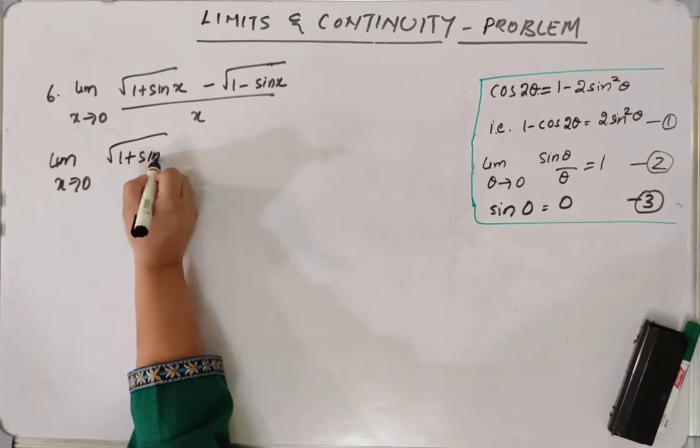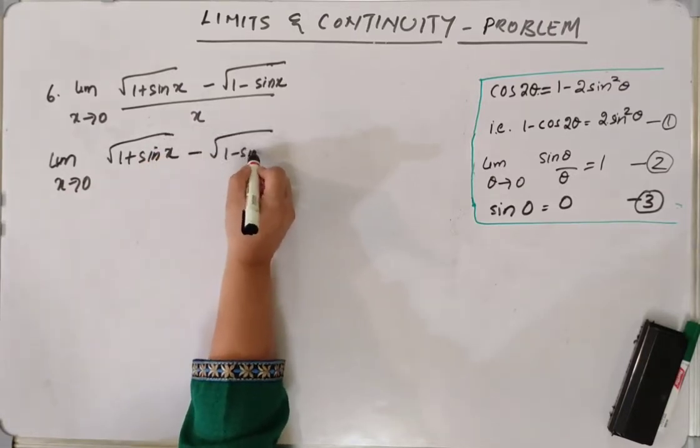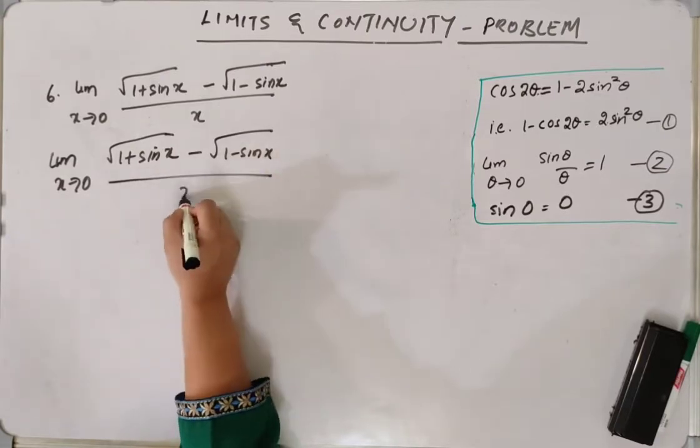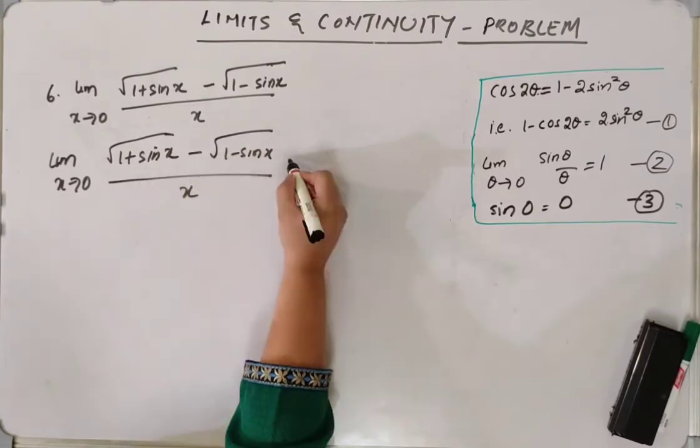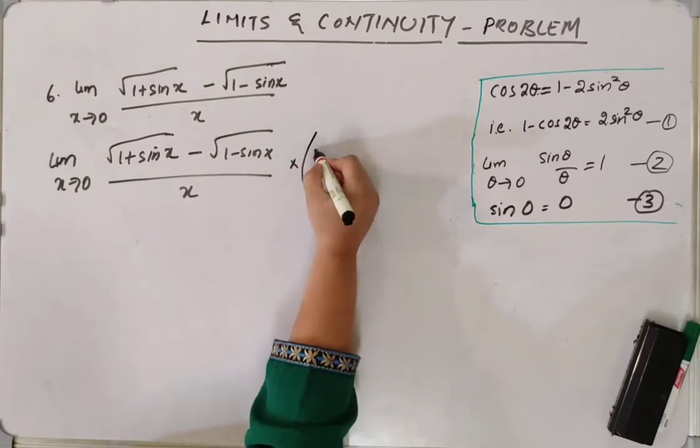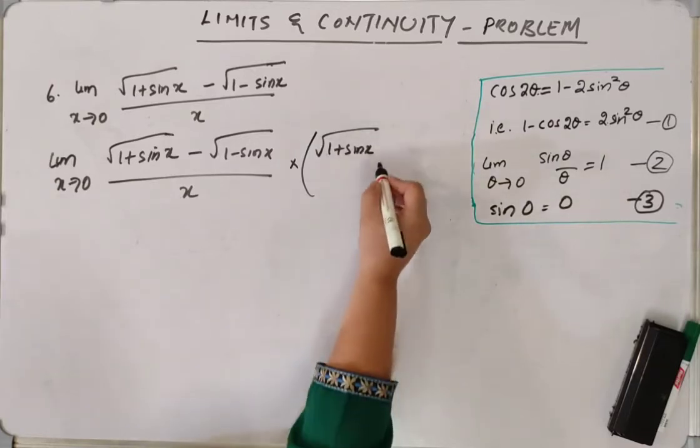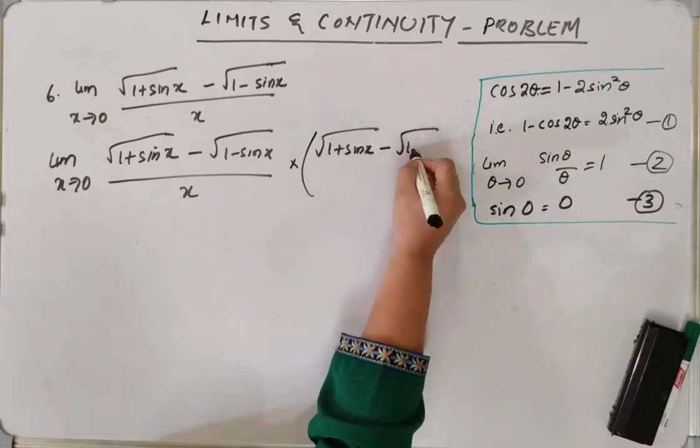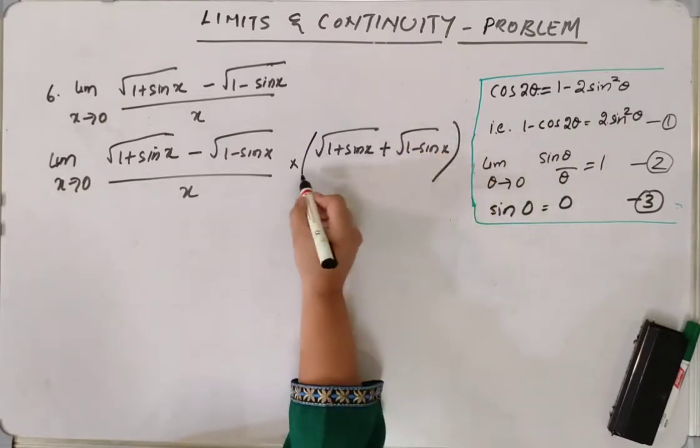1 plus sin x minus 1 minus sin x per x. We can multiply and divide by this numerator: 1 plus sin x minus 1 minus sin x. We will take this as plus. It becomes easier to simplify.